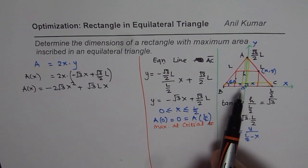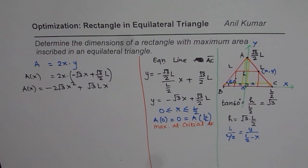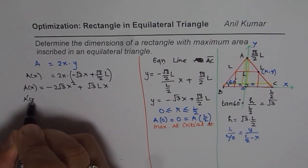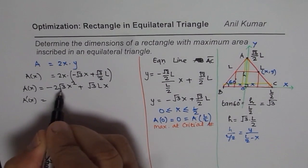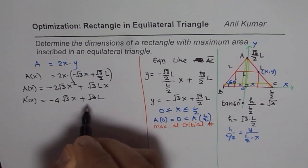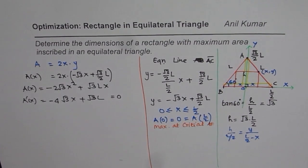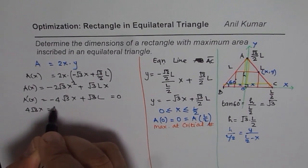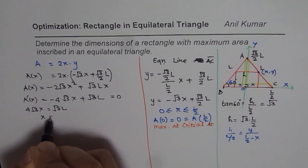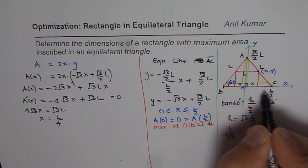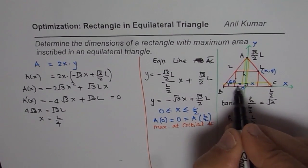The critical number will give us the maximum. To find it, we take the derivative: dA/dX = -4√3·X + √3·L. Setting this equal to 0: 4√3·X = √3·L, so X = L/4. Remember that the full width of the rectangle is 2X, so the width is 2 times L/4.